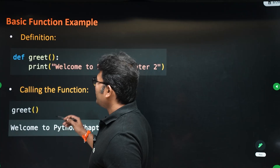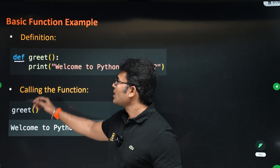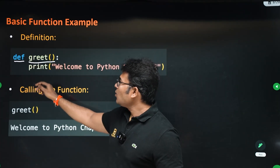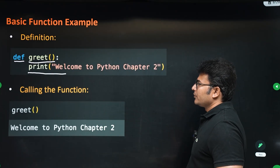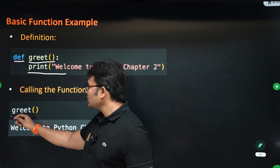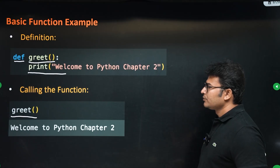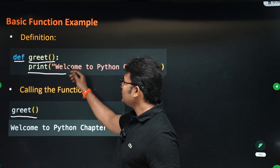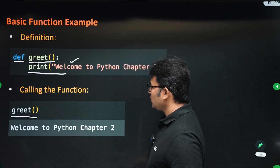Here is a basic function example. `def` means definition, followed by the function name which is `great`. There is only one line in the function, which is printing 'Welcome to Python Chapter 2'. You call it by writing `great()` — the name of the function — and that line will be executed and you will see 'Welcome to Python Chapter 2'.